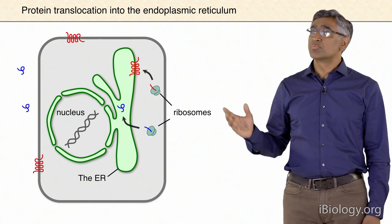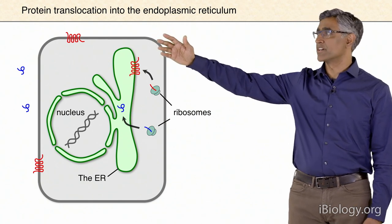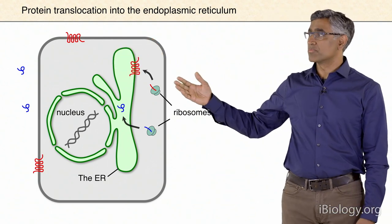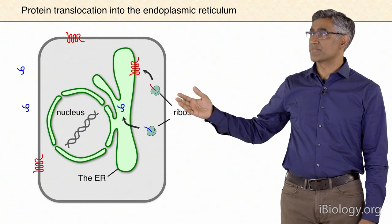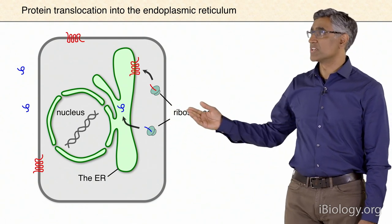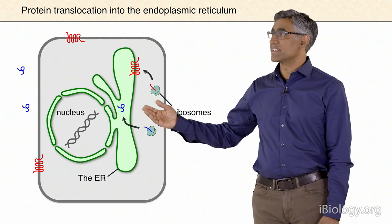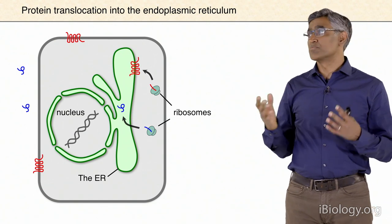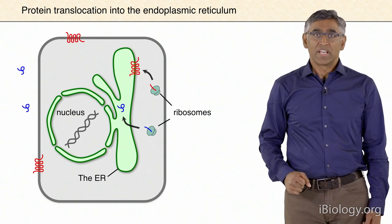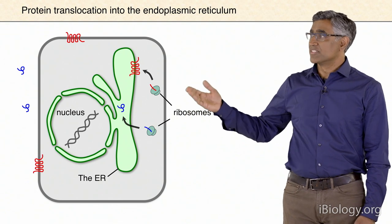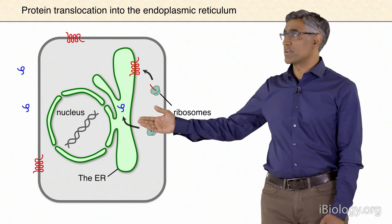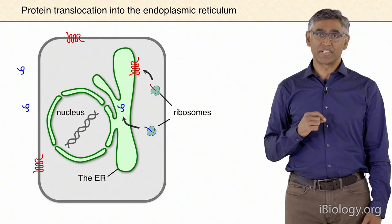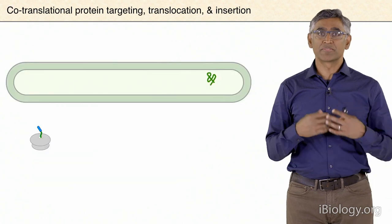To remind you, proteins that wind up either on the surface of the cell or outside the cell initially start their synthesis at the endoplasmic reticulum. Ribosomes that synthesize them dock at the ER surface and either translocate the protein across the membrane or insert it into the membrane. These proteins then traffic to their final destinations. The question is, how are the signals recognized here with high fidelity by their respective machinery?